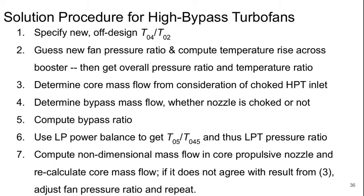So the way we can go about solving this is to first specify whatever new off-design T0.4 over T0.2 we want to solve for. Then basically guess a new fan pressure ratio. What we know is that if it's a higher T0.4 over T0.2 the fan pressure ratio should be higher, and if it's lower it should be less. How much is not well known a priori, so it takes an iteration.